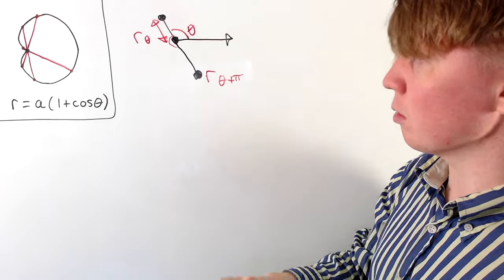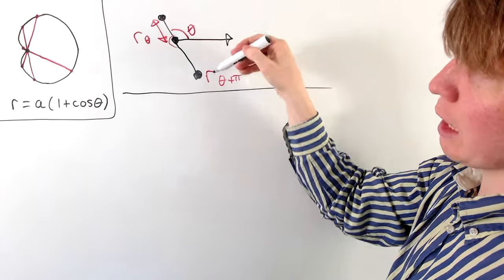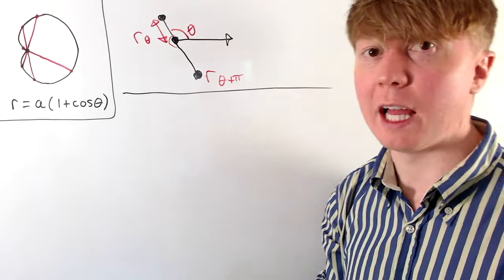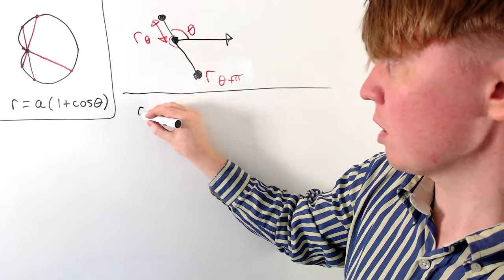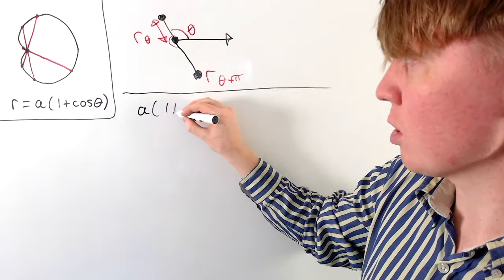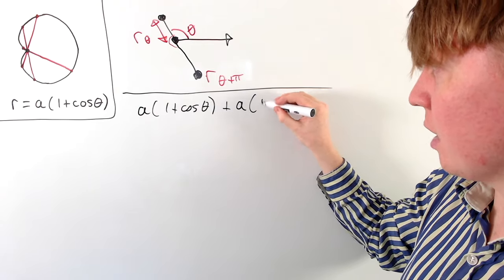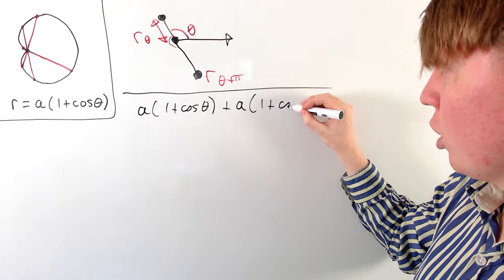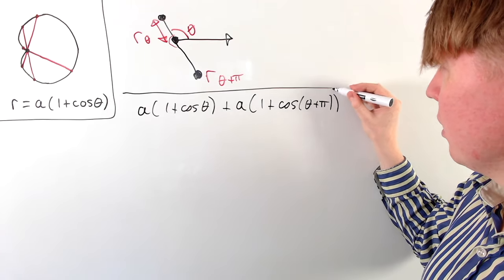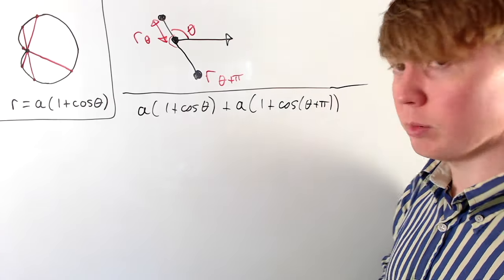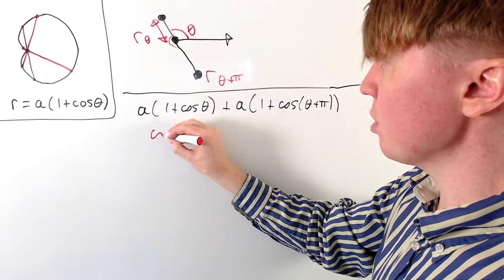We can now calculate the total length of this chord. Substituting in for theta, the first part is A times one plus cos theta. For the other end, we have A times one plus cos of theta plus pi. We can simplify this cos(θ + π) term — we'll derive it quickly using the angle sum formula.